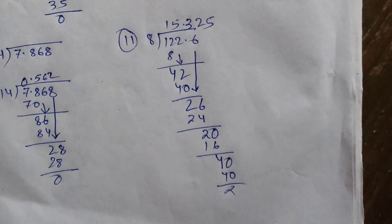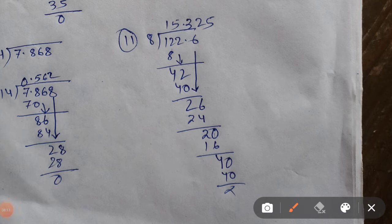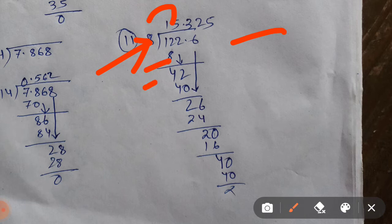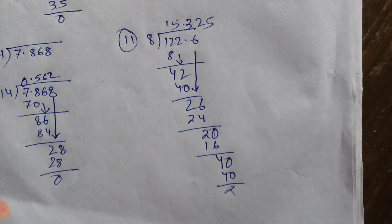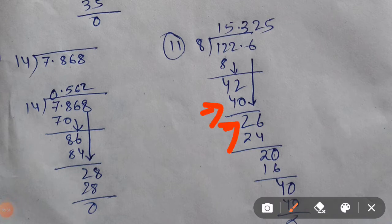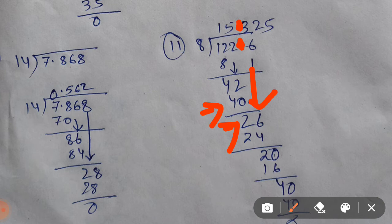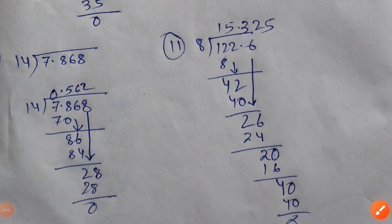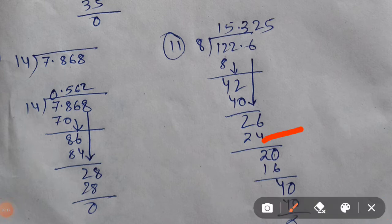Question number 11: the dividend is 122.6 and divisor is 8. 2 comes down, then 42, and 8 times 5 is 40. If you subtract 40 out of 42 you will get 2 as a remainder. Then 6 comes down. Before bringing 6 down you have to take the decimal point up, because the numbers before the point are already divided. We will now divide the number after the decimal point. Take the decimal point up, then start: 8 times 3 is 24. If you subtract 24 out of 26 you will get 2.